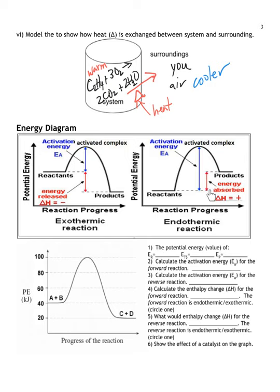In an endothermic diagram, the product's potential energy is higher than the reactant's, giving a positive enthalpy. The activation energy is also higher in endothermic reactions — there's a very long stretch from reactants to the activated complex compared to an exothermic reaction. That's why endothermic reactions don't occur as often. Exothermic reactions are more favorable in nature because they release energy rather than absorb it.